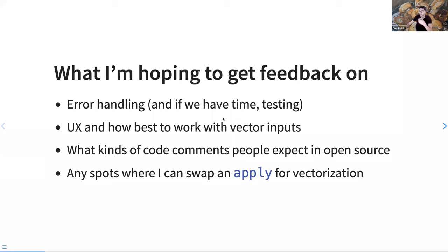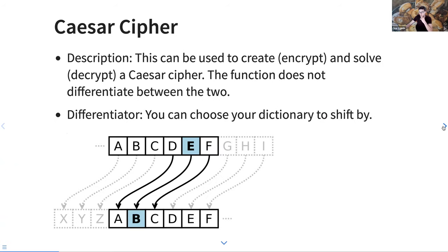To start off, the very first function I wrote was a Caesar cipher. This can be used to encrypt or decrypt — the function does not differentiate between the two. If you pass it encrypted text, it will give you decrypted text and you don't have to specifically tell it you want to decrypt.